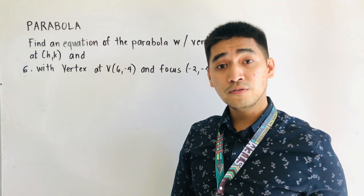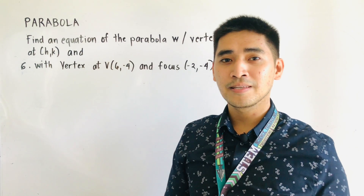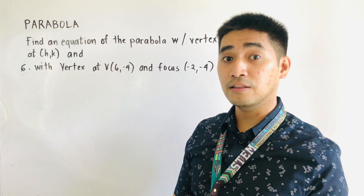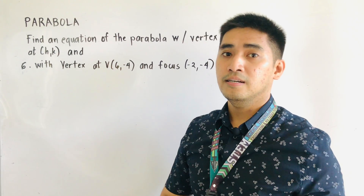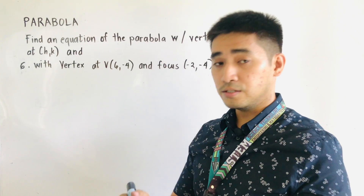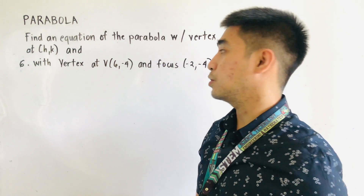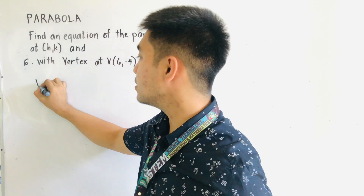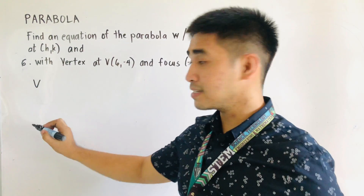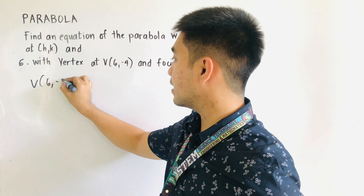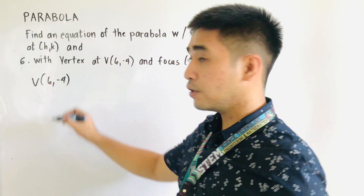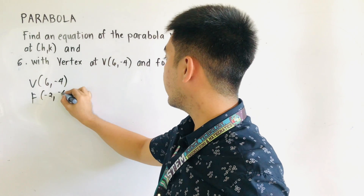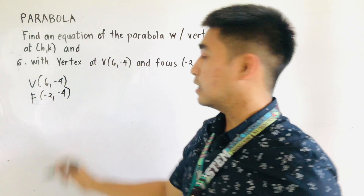I will be teaching you the shorter method for this one. So we will be graphing and there is a technique that I always do in order for me to get the standard equation of the parabola. So let us first write the vertex. The vertex is located at (6, -4) and the focus is located at (-2, -4).